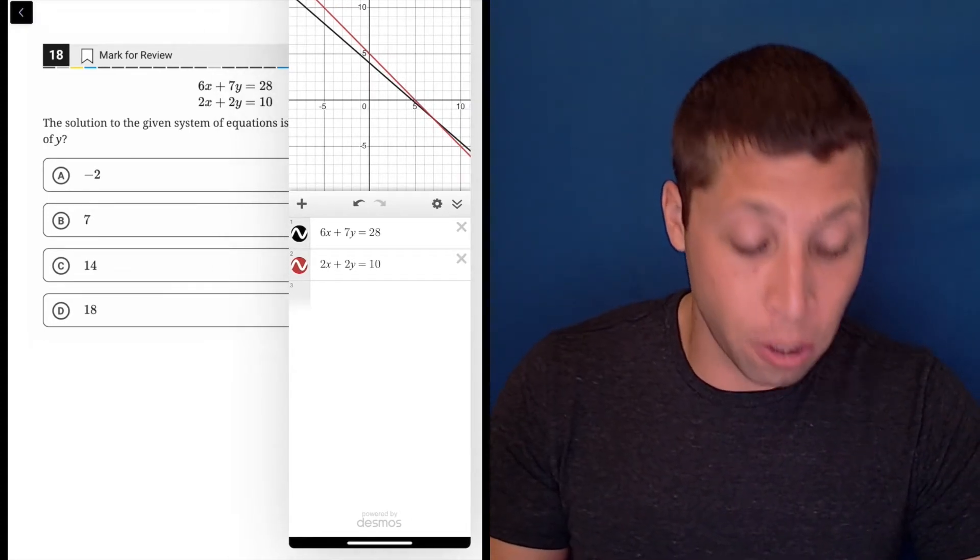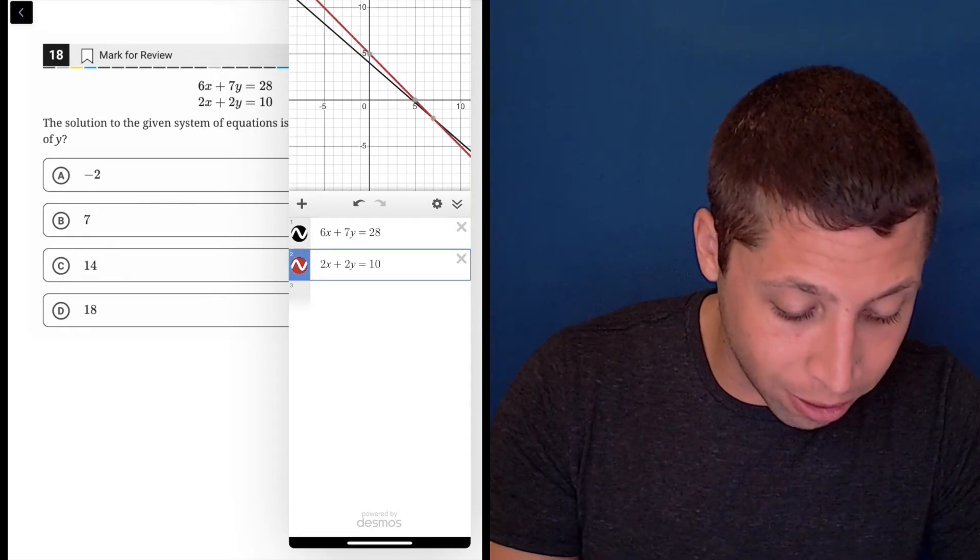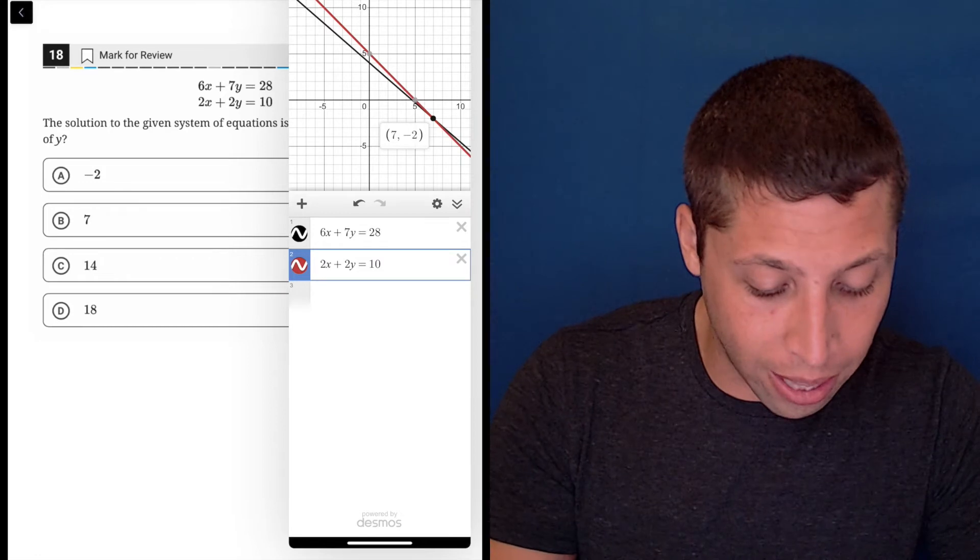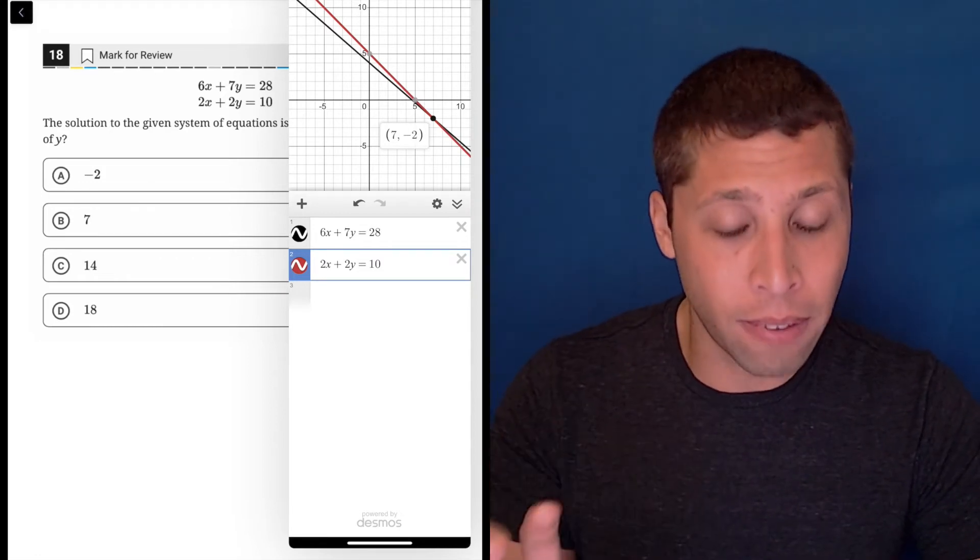So I graph them here for you. And so if I click around, you can kind of see it's close, but the Desmos is going to give you kind of that point of intersection as a highlighted point. So it's easy to find.